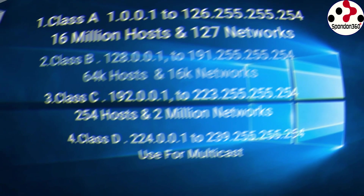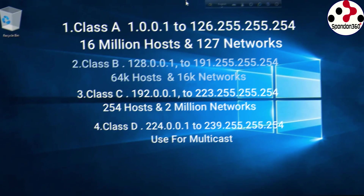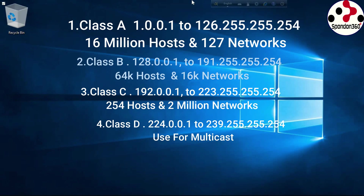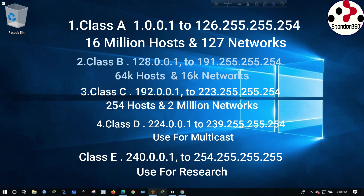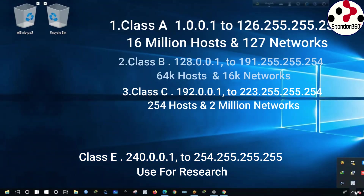Class D: 224.0.0.1 to 239.255.255.254, used for multicast. Class E: 240.0.0.1 to 254.255.255.254, used for research.